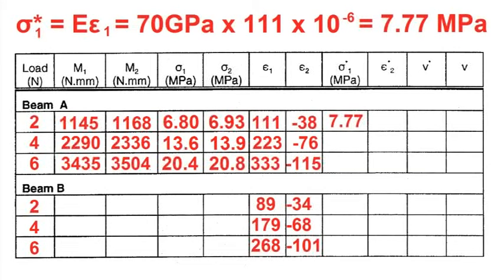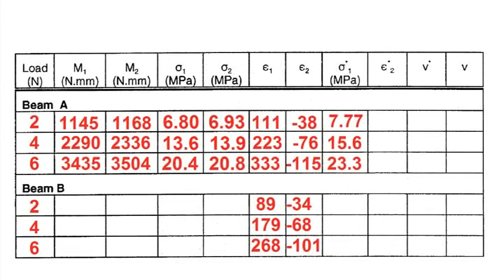Calculate the experimental normal stress at point one, or sigma one star. This is equal to the modulus of elasticity of the material. For aluminum, we will take the published value as 70 gigapascals, multiplied by the strain at one, or epsilon one.